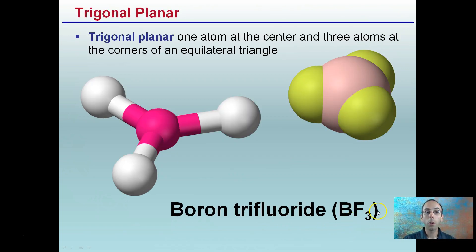Another example here, trigonal planar. So one atom at the center and three atoms at the corners of an equilateral triangle. So I want you to understand for this one, trigonal planar, there's three here forming a triangle all on the same plane. It's all on the same plane there.